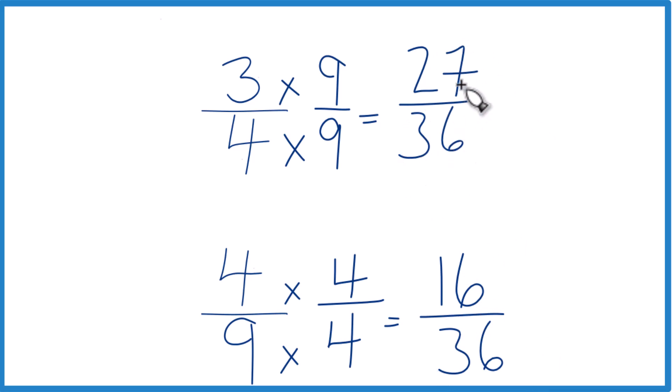And you can pretty clearly see that 27 is larger than 16, so 27 over 36, that's larger than 16 over 36. And these are equivalent here and here, so 3 fourths, that's going to be larger than 4 ninths.